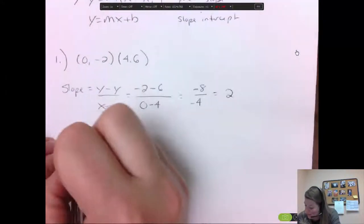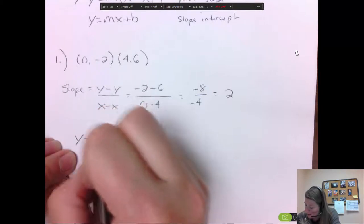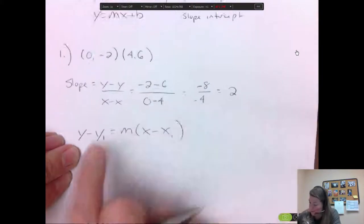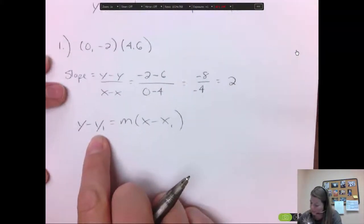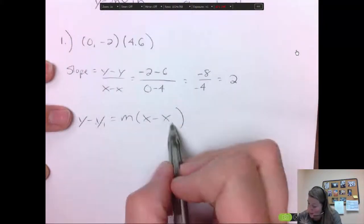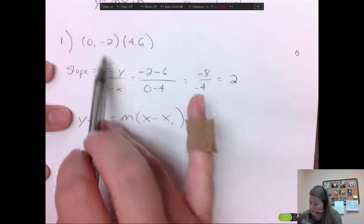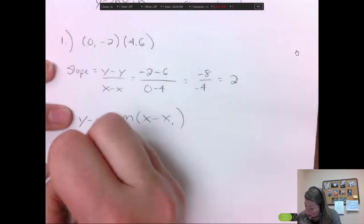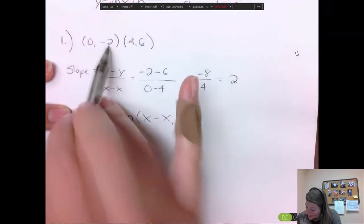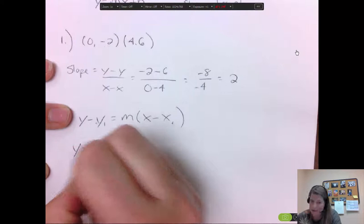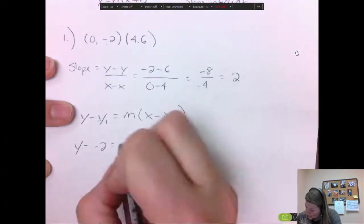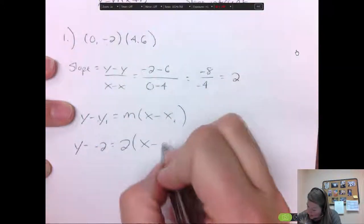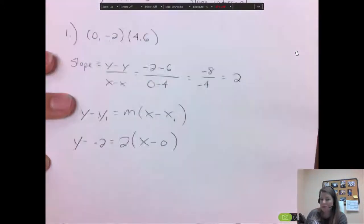Now we put this into our formula y minus y1 equals m times x minus x1, and I think I forgot the 1 on my original one up top. That's okay. So the ones are where you put the point, and I would go with either point. I like the one with the 0 and the -2 because it's got a 0 in it. So I'd go y minus the y1 is -2. Notice the double negative equals m we just found is 2, x minus x1 is 0. And sometimes you can be done here.